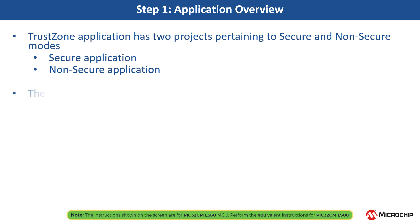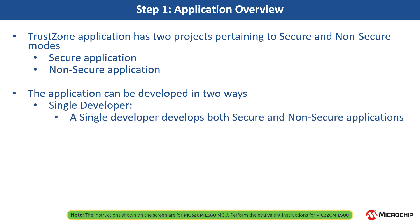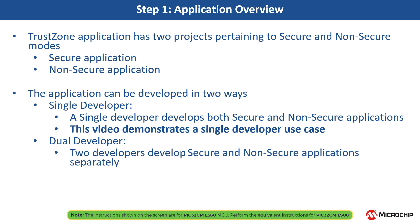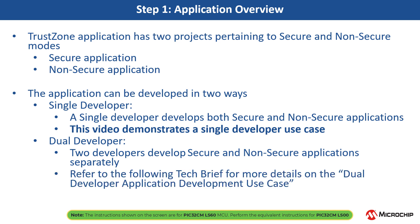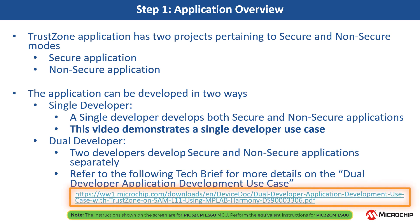The application can be developed in two ways. In the Single Developer case, one developer develops both secure and non-secure applications. In this video, both projects demonstrate a single developer use case. In the Dual Developer case, secure and non-secure applications are developed by two developers. Refer to the following tech brief for more details on the Dual Developer Application Development Use Case.